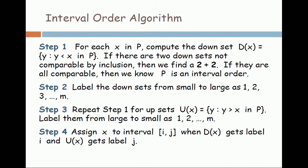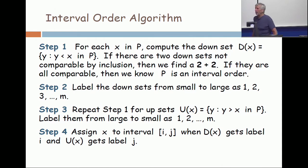So in step one, you compute the downsets. If they are all comparable, we know P is an interval order. If there are two which are incomparable, then you look inside and you find a 2 plus 2.